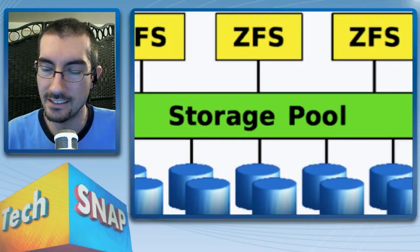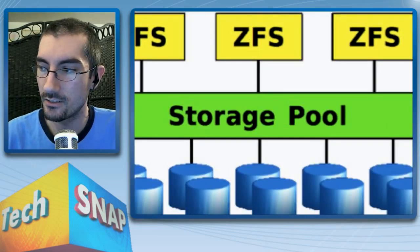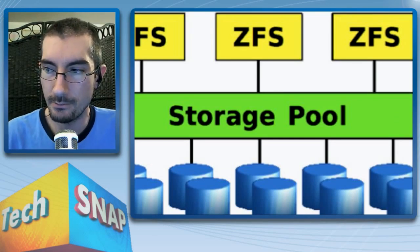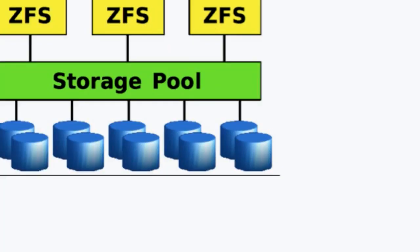ZFS works differently — it has pools, and you create volumes on top of those. Your mount points, or data sets, can share the same storage pool. So you can create two or three different mount points — what most people would think of as partitions — all sharing a common pool. If you have five terabytes total, you can make as many partitions as you want and each one sees all five terabytes of free space. As you use space in one, it disappears from all of them.